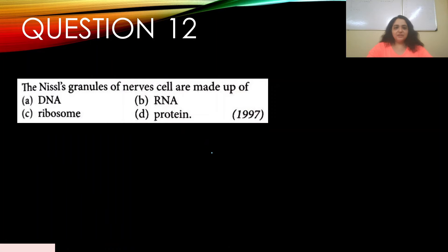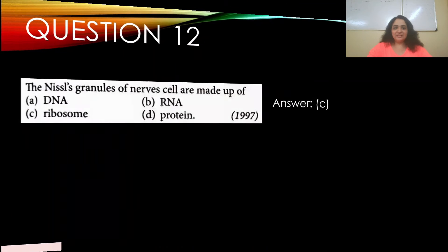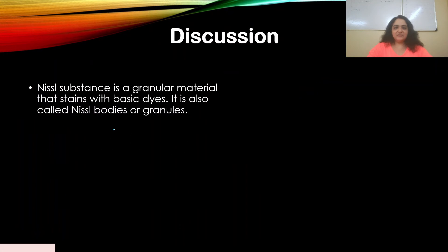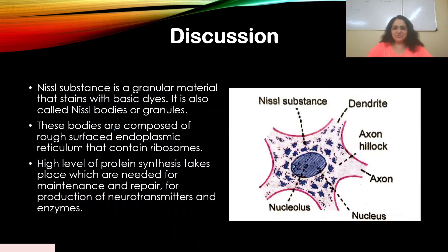Question number twelve: The Nissl granules of nerve cells are made up of — appeared in 1997. Options: a) DNA, b) RNA, c) ribosomes, d) protein. The answer is c) ribosomes. As discussed earlier, Nissl bodies are composed of rough endoplasmic reticulum containing ribosomes, which carry out protein synthesis.